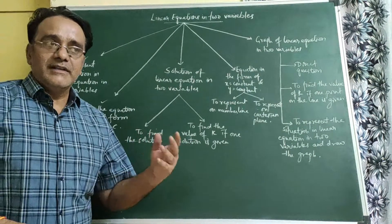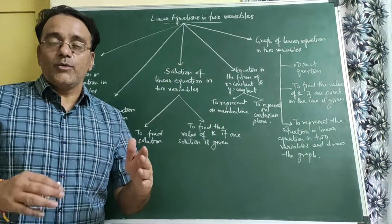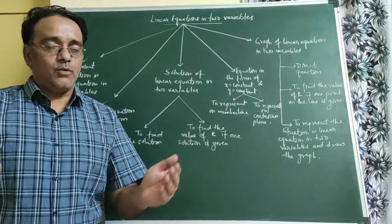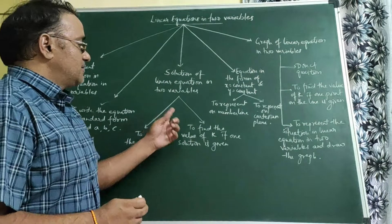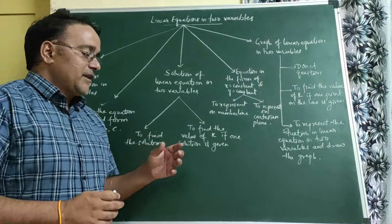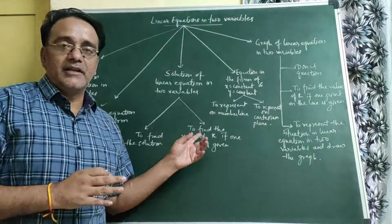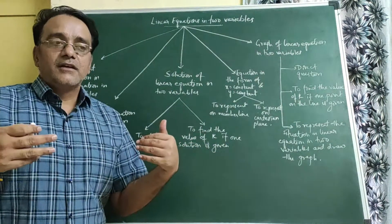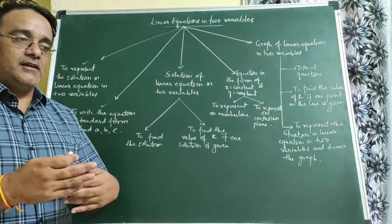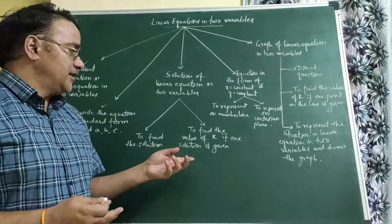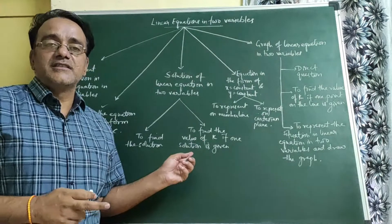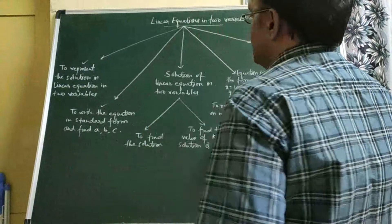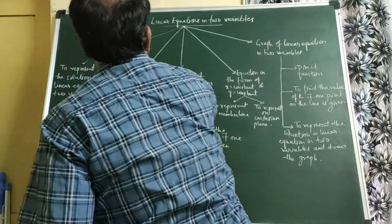The first type is to find one solution or two solutions — the equation will be given to you and you need to find the solutions of that equation. The second type is that in the equation some unknown constant will be there, such as k or lambda. If one solution is given, you need to find the value of that unknown constant.